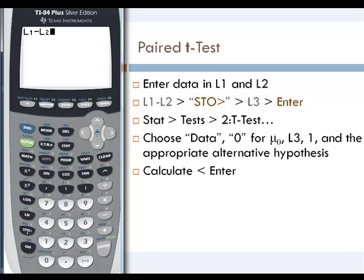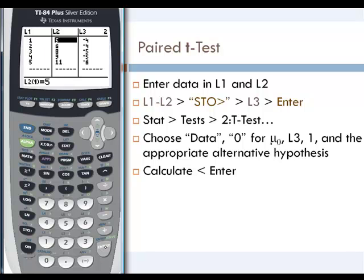and then the STO key that's right above the ON for store, and then we want to store that in L3, so 2nd3, and then we press ENTER. That data gets stored into L3, so when we go back to STAT and EDIT and we look at L3, all of that data is stored in L3.